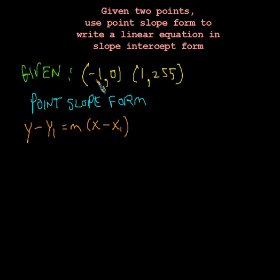In this case, we have two x's, -1 and 1, and we have two y's, 0 and 255. So we get to choose which of these x's is our x1. Let's say we choose this one to be x1, then this will be our y1. We get to choose, or we can make this x1 and this y1.